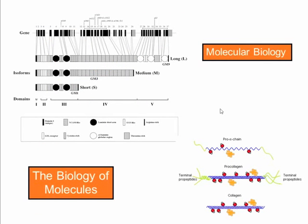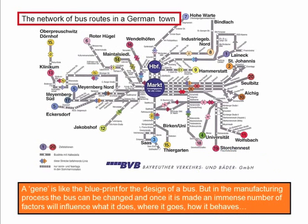When we're looking at the biology of molecules, it's far more complex than molecular biology. This analogy — with a gene being like the blueprint for the design of a bus, and this being the bus routes of a German town — just emphasises the complexity of the biology of molecules.